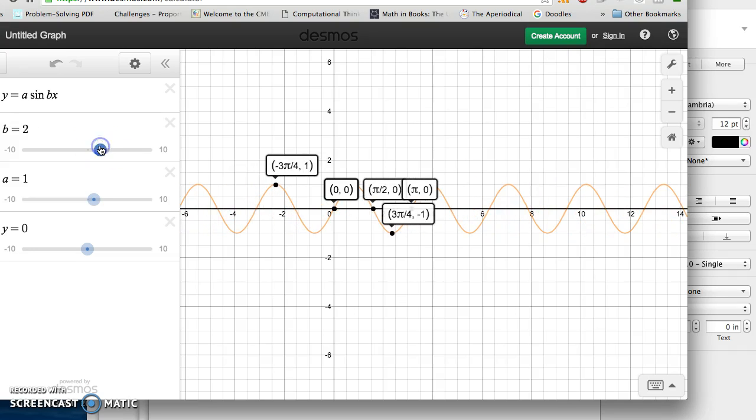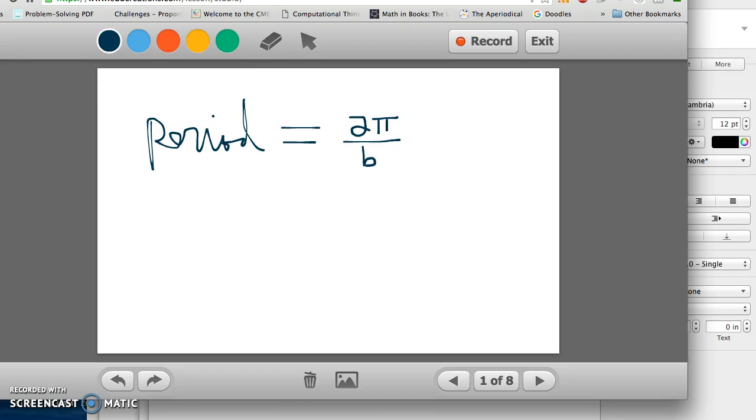So, I'm not going to test you on frequency. Basically, what you would need to know, though, is that b is high. High b means low period. Low b means high period. So we don't usually say low period or high period. We say big period or larger period, smaller period.